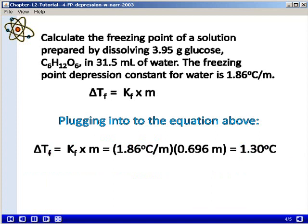We can now plug this molality into the equation above. So our change in the freezing point is going to be equal to the freezing point depression constant for water times the molality of the solution. So we see that our change in freezing temperature is 1.30 degrees Celsius.